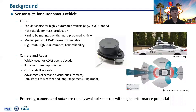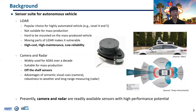LiDAR is one of the most popular choices for highly automated vehicles due to its high accuracy. However, LiDAR is not yet suitable for mass production and is hard to mount on vehicles. Due to the nature of its operating mechanism, such as many moving parts, LiDAR has high cost, high maintenance, and low reliability issues.